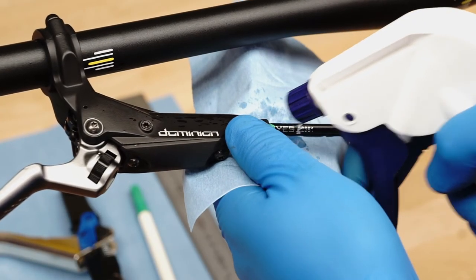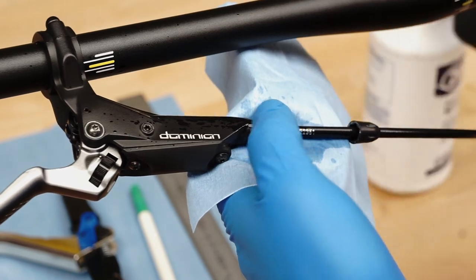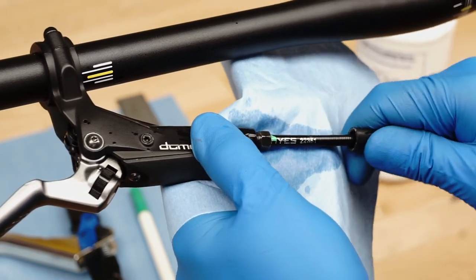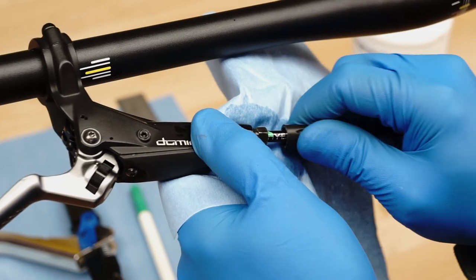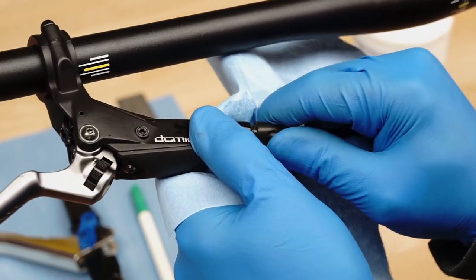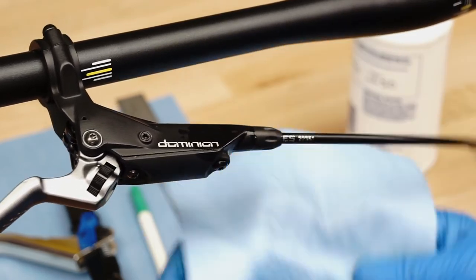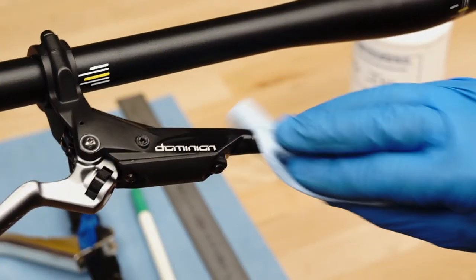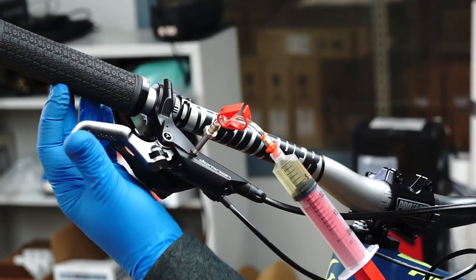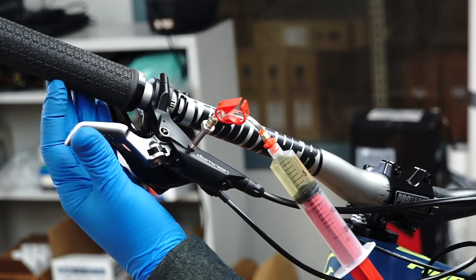Slide the nose cone back over the compression nut and you have completed the hose cutting process, including replacement of the compression nut and bushing. Because you have opened this brake system, you will need to properly bleed it. Brake bleeding is covered in our Dominion brake bleeding video.